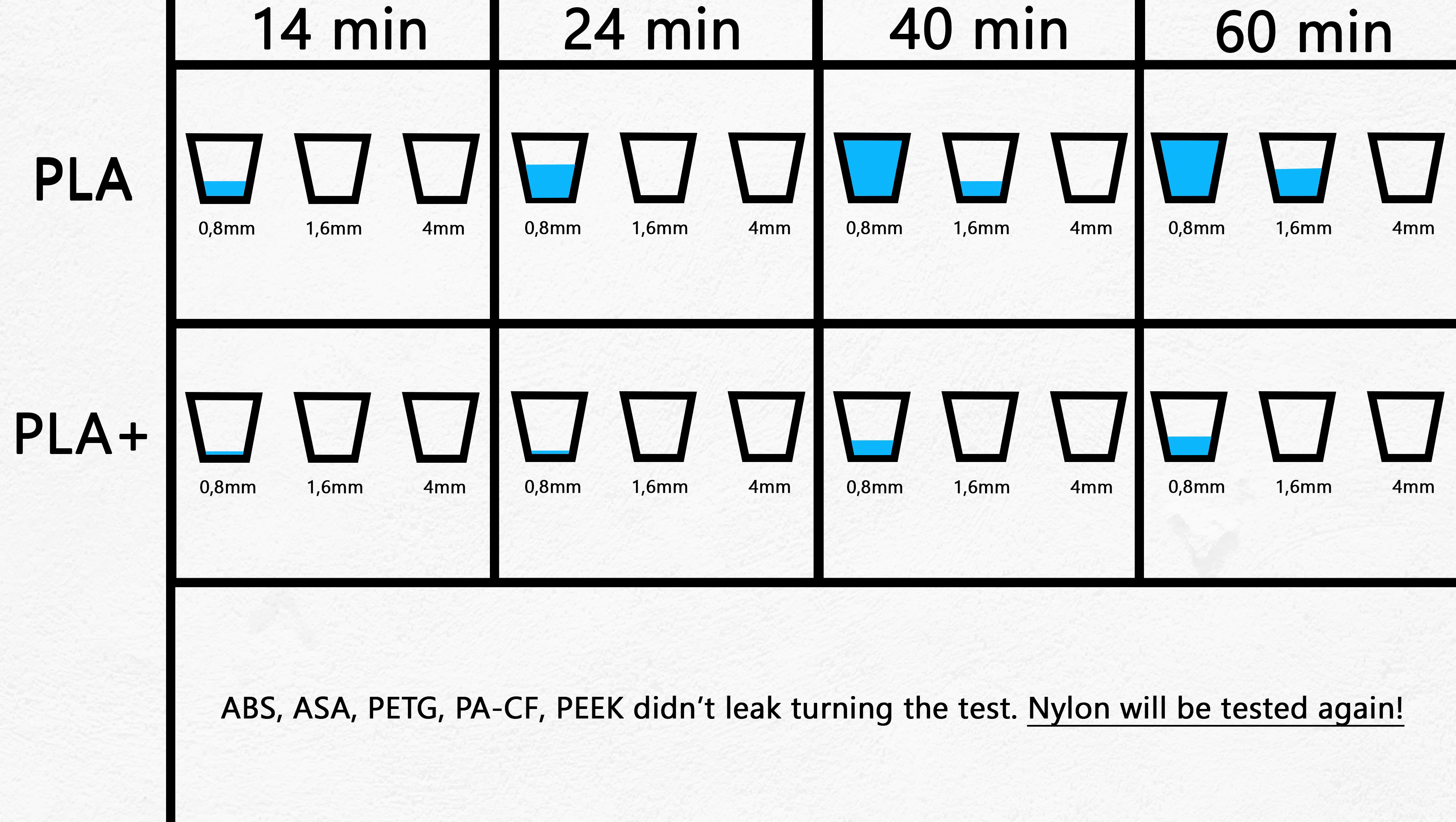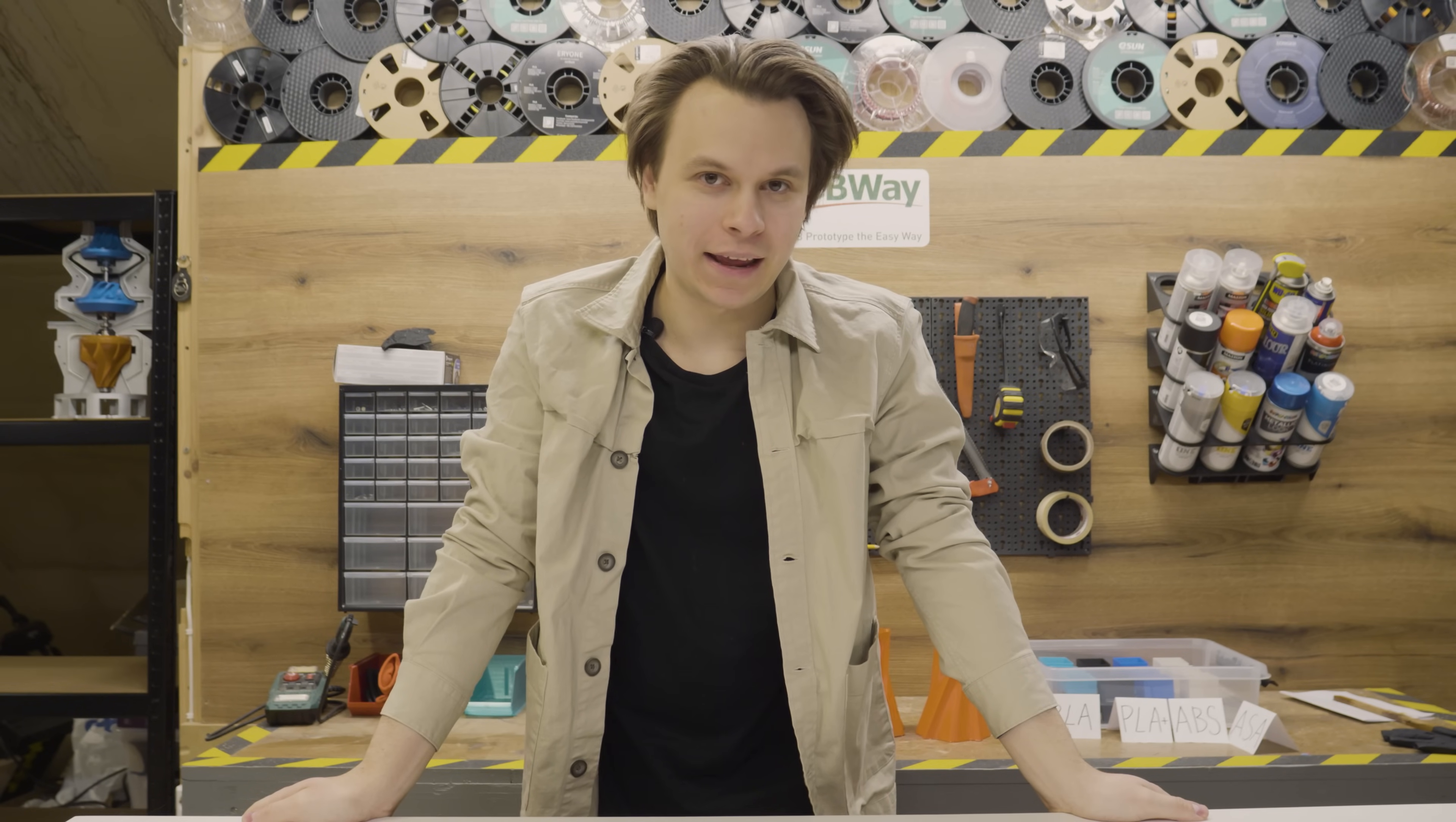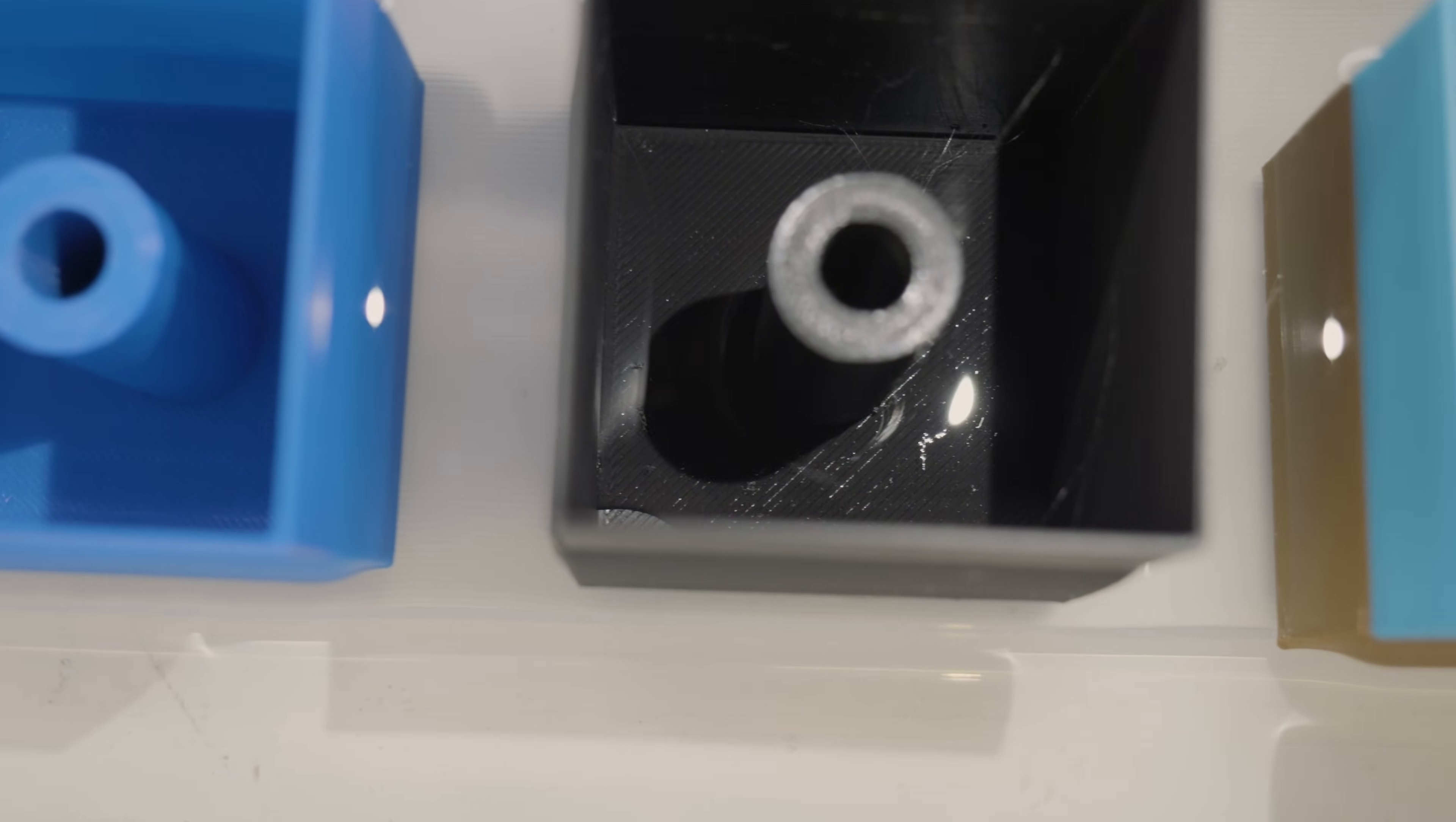So we can confirm PLA and PLA+ are leaking water, and the rest of the materials, ABS, ASA, PETG, carbon fiber nylon, and PEEK don't leak water. Nylon is not confirmed yet. The test turned out kind of an unorganized mess, like my life. But we did get the answer to the main question - does PLA leak? And the answer is yes. PLA does leak. It was a big surprise for me how fast PLA actually leaked. It was a matter of minutes. PLA+ also leaked but at a bit slower rate, but it doesn't matter because the difference was not so huge.